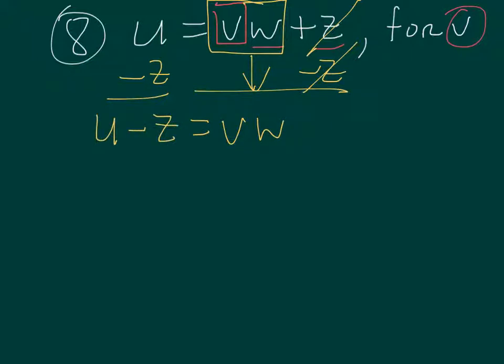Now we're still gonna get this V by itself, so we have a W attached to it. The way we get W detached is—this is multiplying by W—so we can either do one of two things: we can either multiply by the reciprocal or we can divide both sides by W. Now this U minus Z is attached, so we would have to divide the whole thing by W.